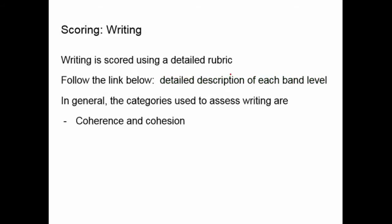The first is coherence and cohesion, which is all about how your writing and ideas stick together and make logical sense. Coherence is about how one idea leads to the next; cohesion is about how you use words like pronouns or transition words to hold your writing together. Lexical resource is a fancy way of saying you have a really good vocabulary and show your vocabulary knowledge in your writing.